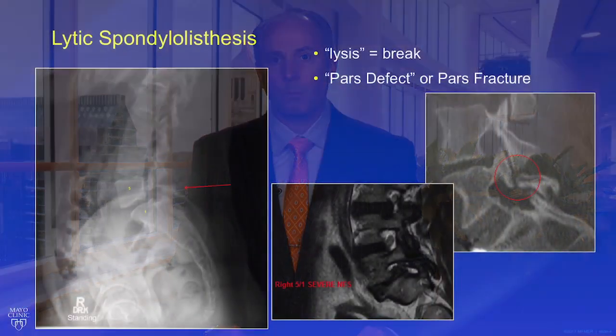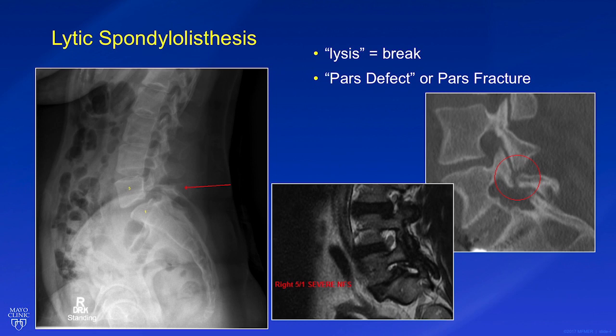In lytic spondylolisthesis, the spine slips because little sections of the bone on the back of the spine, called the pars interarticularis, have cracked or malformed. This releases the vertebra, especially at the bottom of the spine where the spine has a downward slope. The L5 vertebra, which is the lowest lumbar vertebra, is the most common site of a pars defect. We call this a lytic spondylolisthesis because the Greek root lysis means to break — so a lytic spondylolisthesis occurs when the pars breaks and the spine slips. We name the spondylolisthesis for the vertebra that has slipped and the one directly below it, so the most common level for a lytic spondylolisthesis is L5-S1.